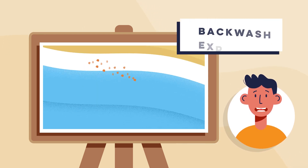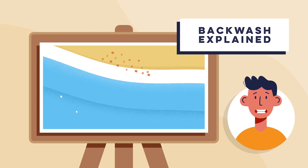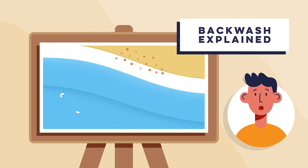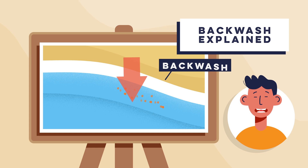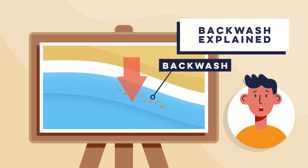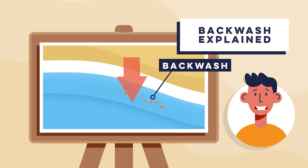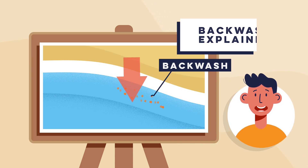Step three is the backwash. After the swash, water drains back to the sea, pulling some of these materials back with it. This is the backwash. Unlike swash, backwash pulls straight down the beach's gradient — this is thanks to gravity, and is not affected by the prevailing wind.